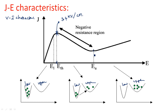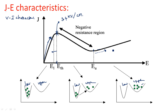When the upper threshold voltage is reached, electrons are completely in the upper valley and only a small current flows due to low mobility. After the upper threshold, current gradually and linearly increases again, but at a much lower rate. These are the J-E characteristics of the Gunn diode, which exhibit the Ridley-Watkins-Hilsum (RWH) theory. This completes the construction and operation of the Gunn diode. Thank you.